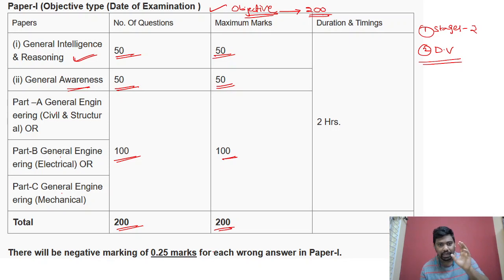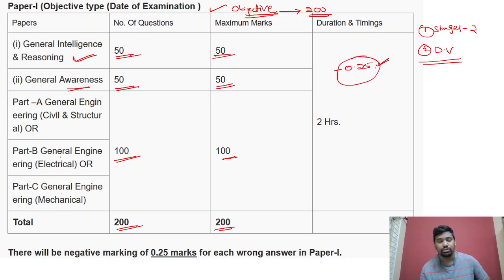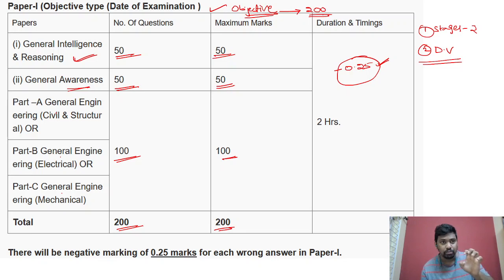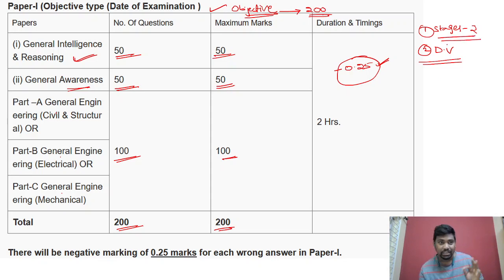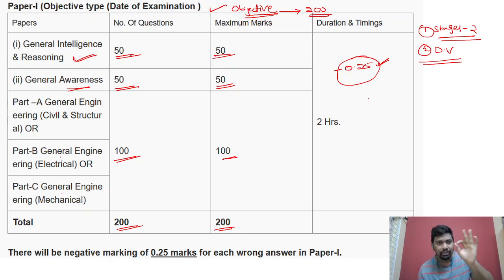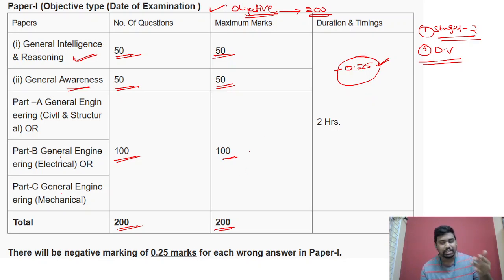Negative marking is there. Every wrong answer: one-fourth mark deducted.